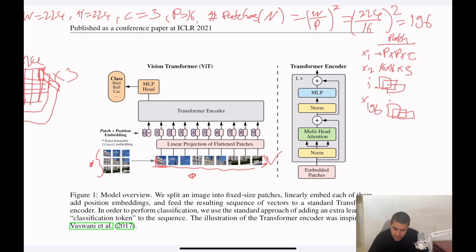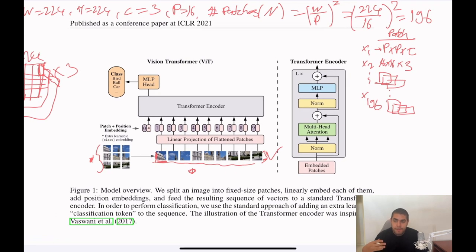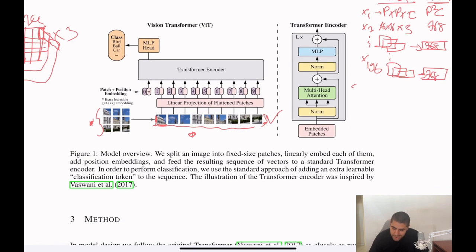This is how this layer looks like. Now, it's time for the linear projection of flattened patches. We want to make them vectors, make all the patches vectors and flatten them. How we are going to flatten them is that basically we are going to multiply P by P by C, which is P squared times C. In our case, it becomes 768. If we visualize it, it becomes a vector like this: 768. So basically, we took this patch, flattened it by multiplying it, and it gave us this vector. And this is the second vector.